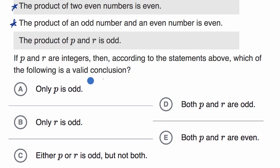We're going to go through each of these choices and see if they can be a valid conclusion. The first statement says only P is odd, which means that R would be even. Let's use two examples. Let's say that P is five, an arbitrary odd number, and let's make R four. What's the product of five and four? Five times four is equal to 20, which is even.